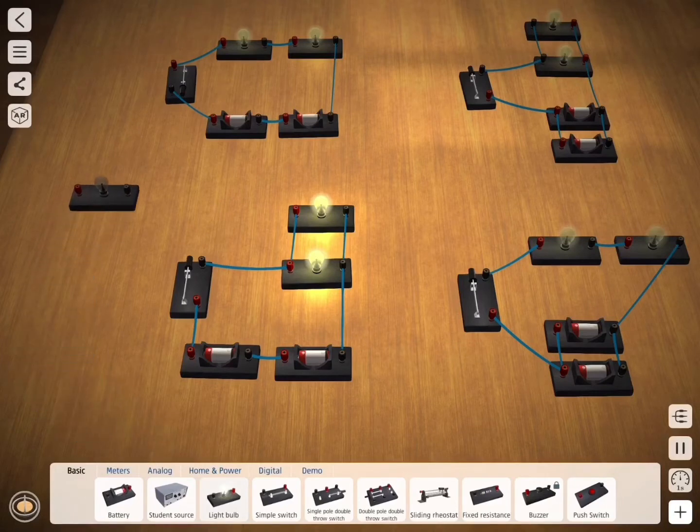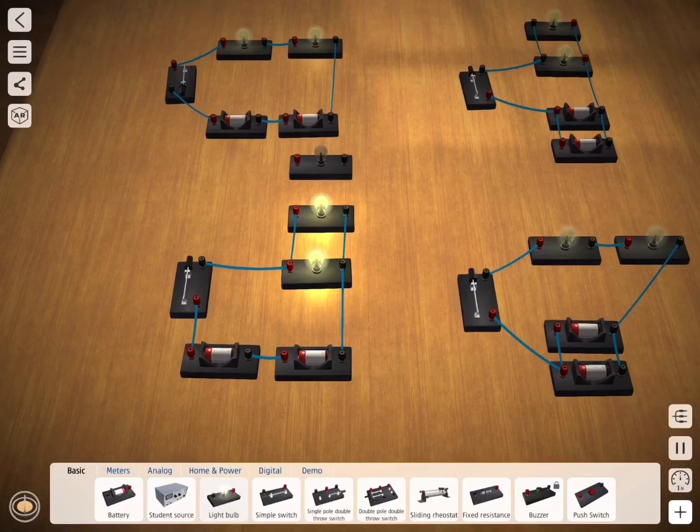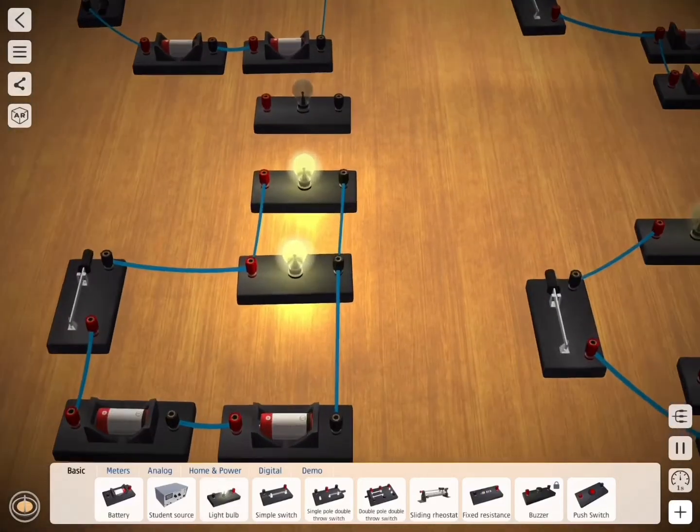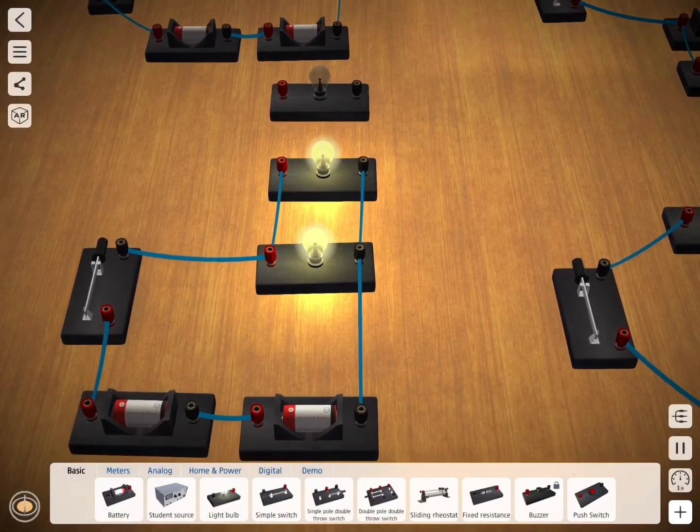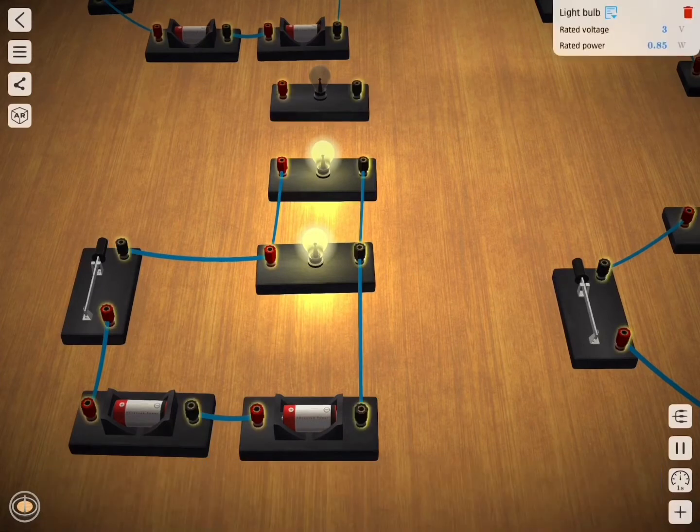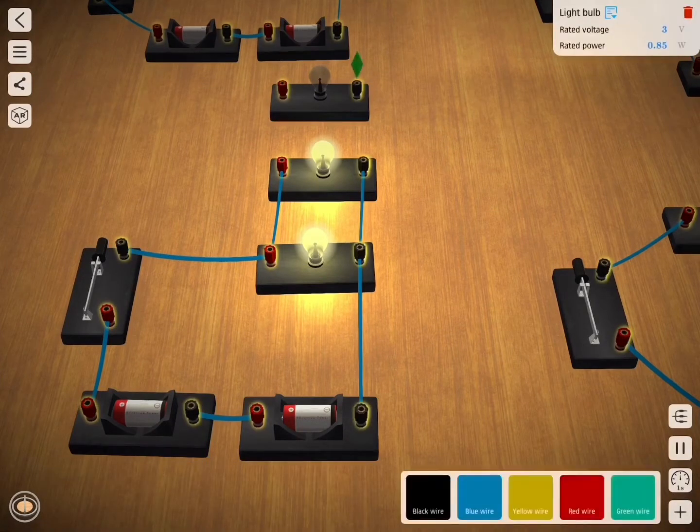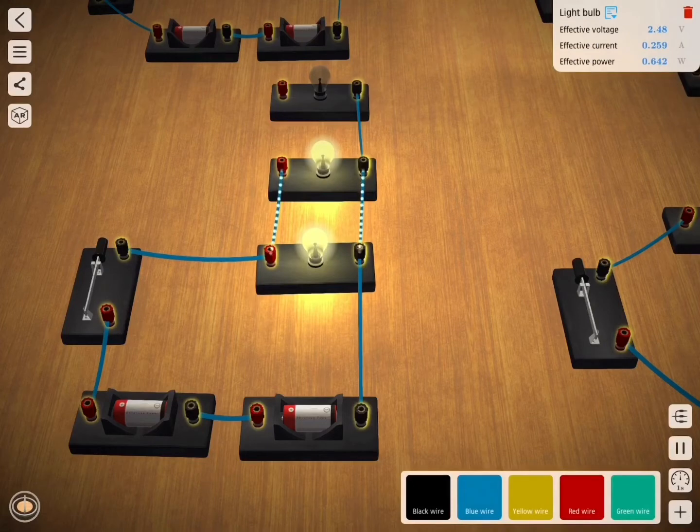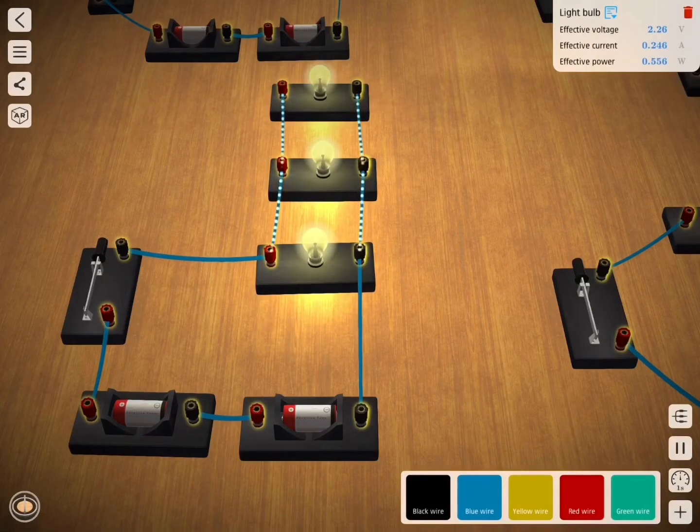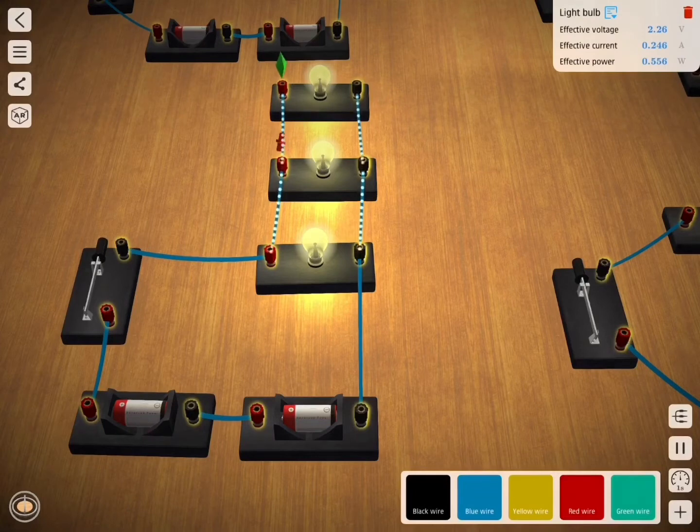At the right hand side corner at the bottom you can see the symbol. If you click on that, you can see a lot of components pop up which you can select and arrange them accordingly after your experiment. Then you can show how it behaves in a parallel circuit and series circuit.